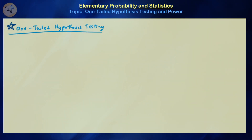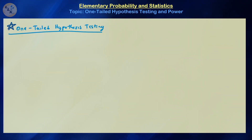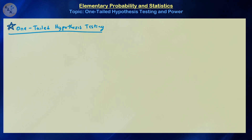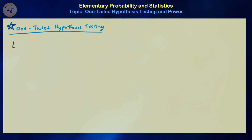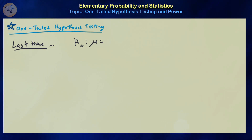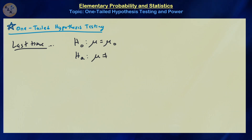Hello there and welcome back. In this video we're going to continue our discussion of hypothesis testing, but instead of focusing on the two-tailed or two-sided alternative hypotheses, we're going to be focusing on the one-tailed or one-sided alternative hypotheses. So let's just briefly review what we talked about last time. Last time we were focused on the hypothesis that mu was equal to some value mu zero, and we were using a two-sided alternative: mu was not equal to mu zero.